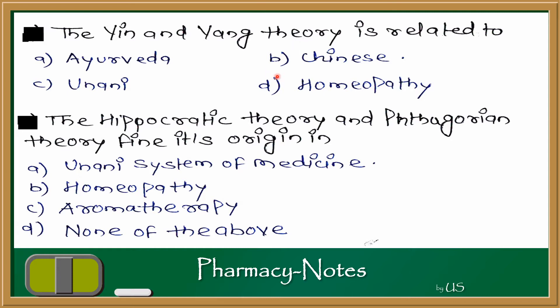Next question: the Hippocratic theory and Pythagorean theory find their origin in which system? If we talk about the options: Yunani, Homeopathy, Aromatherapy, and none of the above. If we remember the Yunani system of medicine, the Hippocratic and Pythagorean theories were the principles of the Yunani system.